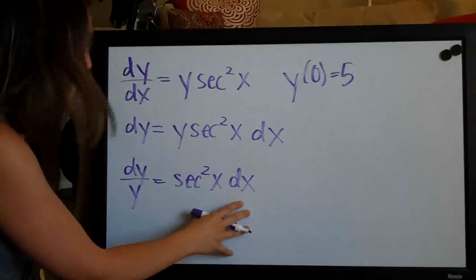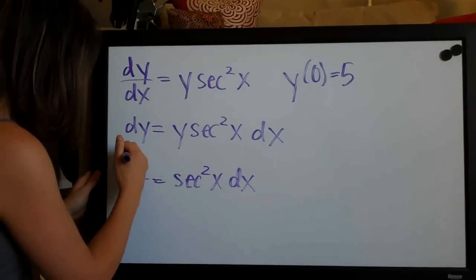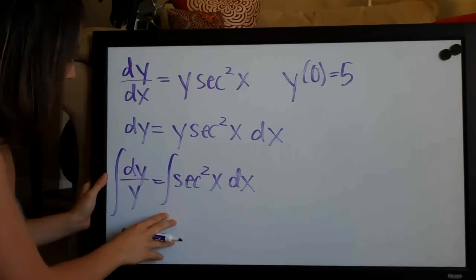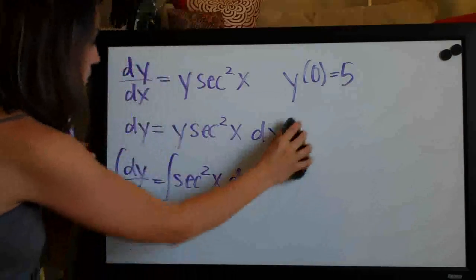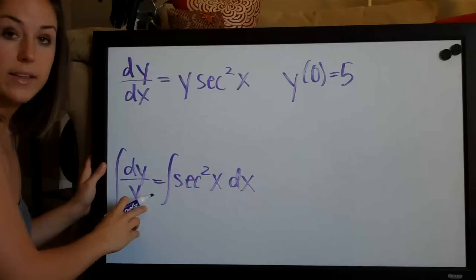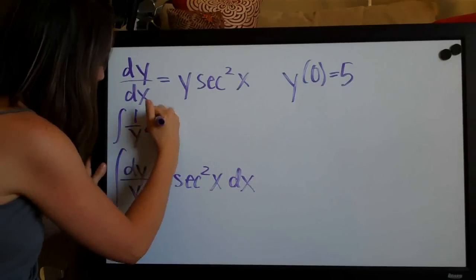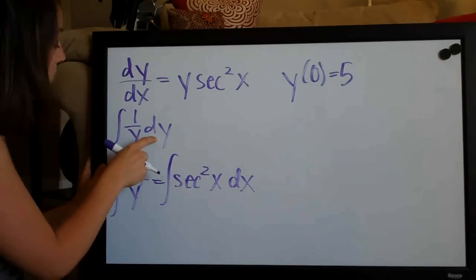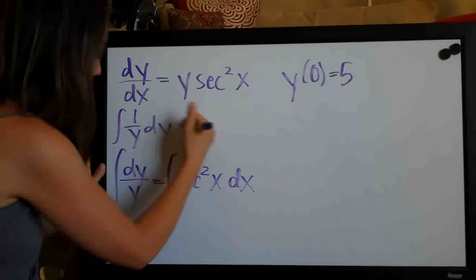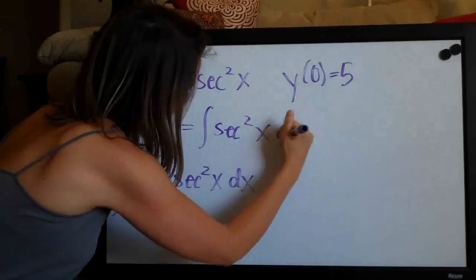So now that we've separated the variables, we will go ahead and integrate both sides. We just tack on integrals to the front of both the left and the right side. And I'm going to go ahead and convert the left side to be one over y times dy. It's a little bit easier to see what we need to do that way but it's actually just the same thing, right? Because if we multiply these together, we have dy on top over y. So it's the same thing, I'm just separating out the dy, equal to the integral of secant squared of x dx.